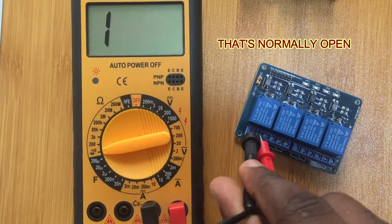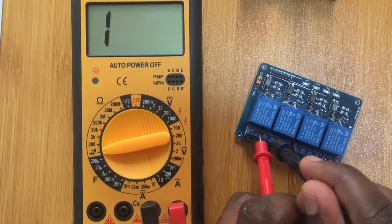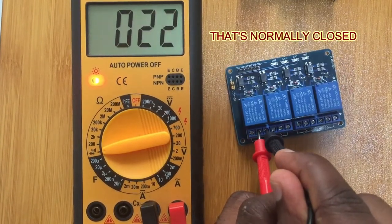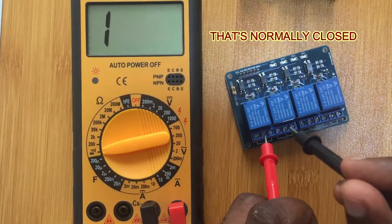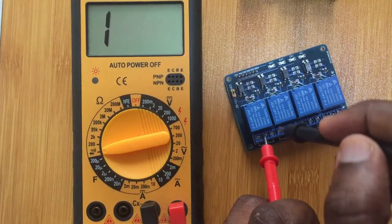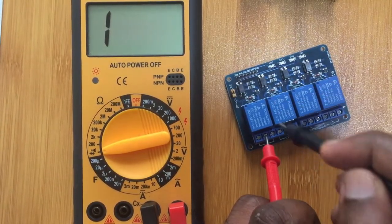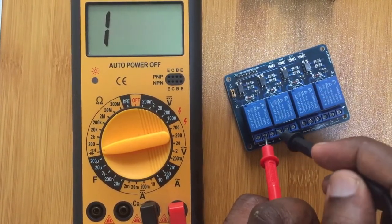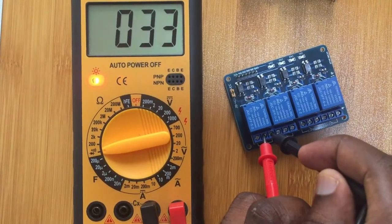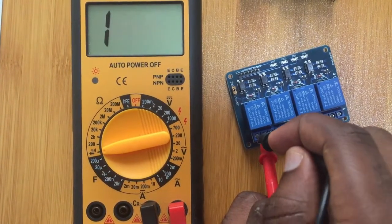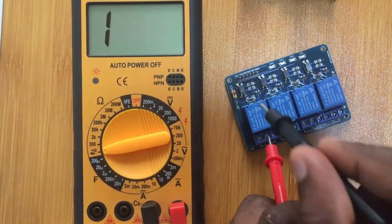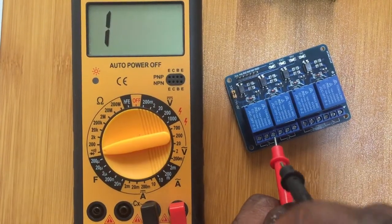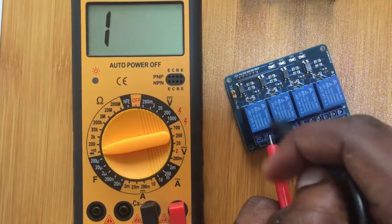When you put here, it means that is the normally closed terminal. So the normally closed terminal means even if there is no signal or there is no current through the relay, these two terminals are connected, while this one is not connected. It only gets connected when there is a signal or current through the relay.